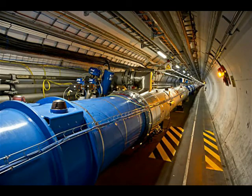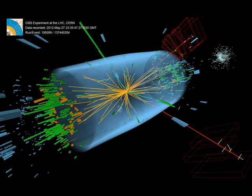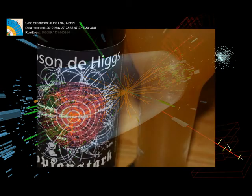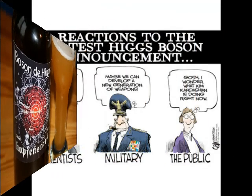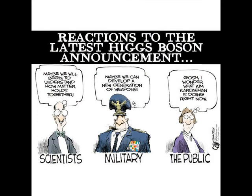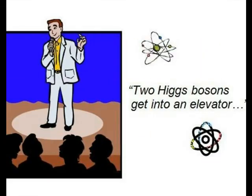The famous college experiment which proves that gravitational acceleration is a constant involves dropping two different masses — two balls — from the same height. Both balls always hit the ground at the same time, proving that gravity is independent of mass.